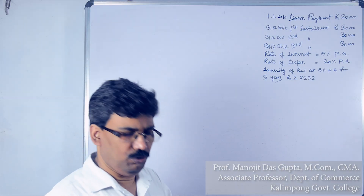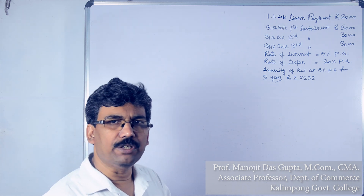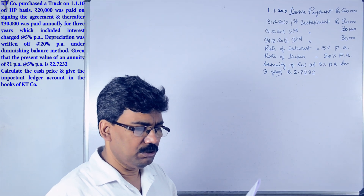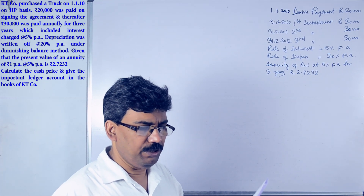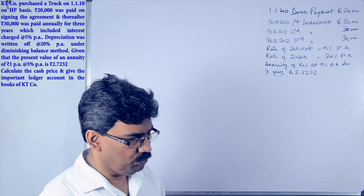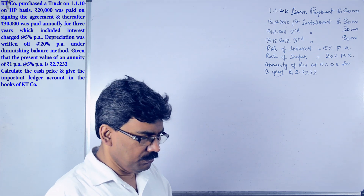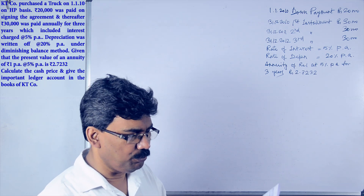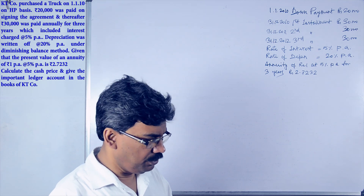Hello viewers, thank you for joining MDD's coaching of commerce. Today we'll do one question based on the annuity factor — it's a new type of problem. KT company purchased a truck on 1st January 2010 on hire purchase system. Rupees 20,000 was paid on signing the agreement as down payment, thereafter rupees 30,000 was paid annually for three years, which includes interest charged at 5% per annum. The rate of depreciation is given as 20%, and one very important new element: the present value of an annuity of rupee 1 at 5% per annum for three years is 2.7232.